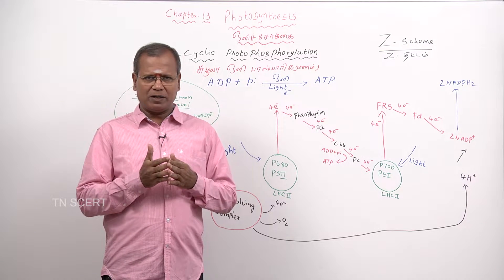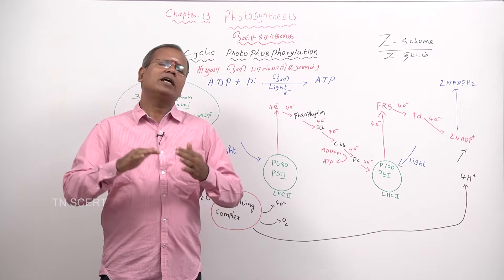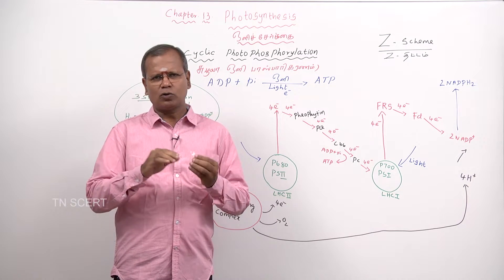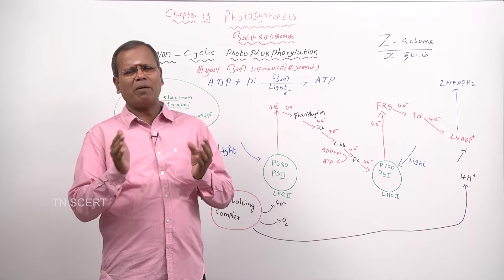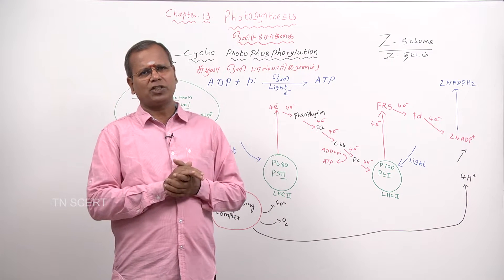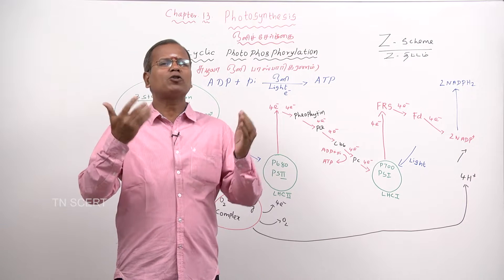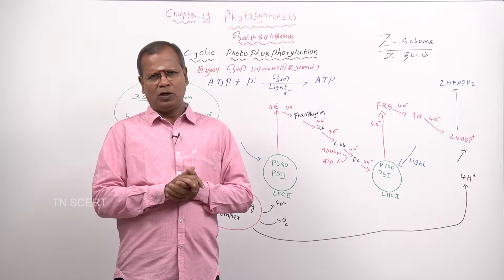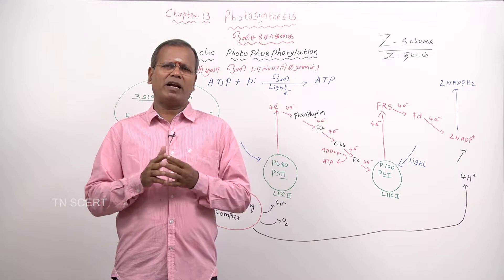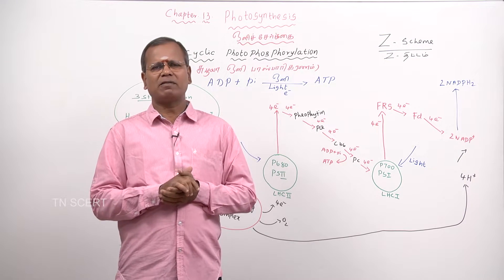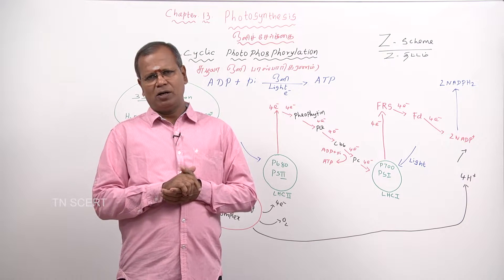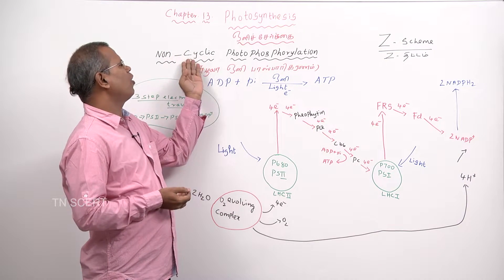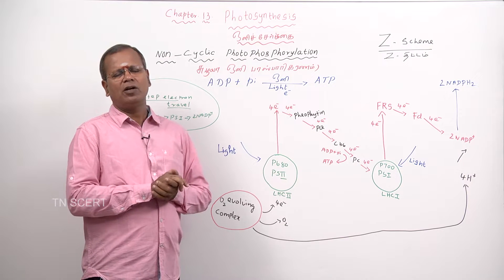There are two types of photophosphorylation. One is non-cyclic, another is cyclic. We have already read about cyclic photophosphorylation. Now we are going to learn about non-cyclic photophosphorylation.